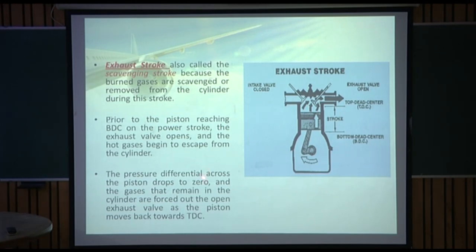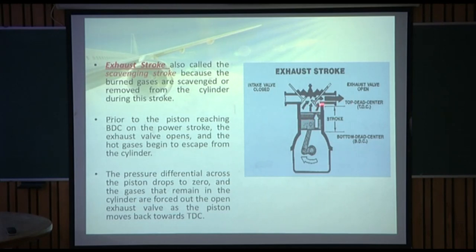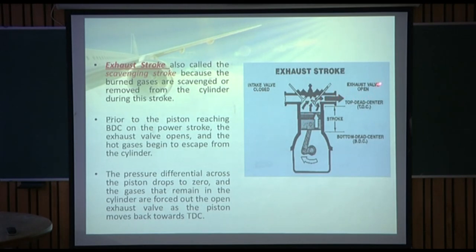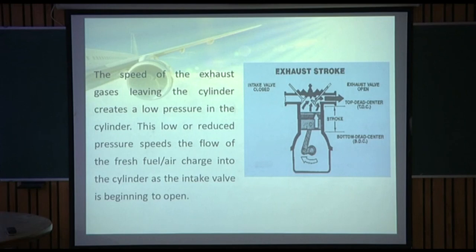Prior to the piston reaching BDC on the power stroke, the exhaust valve opens and the hot gases begin to escape from the cylinder. The pressure differential across the piston drops to zero, and the gases that remain in the cylinder are forced out through the open exhaust valve as the piston moves back towards TDC during the exhaust stroke.